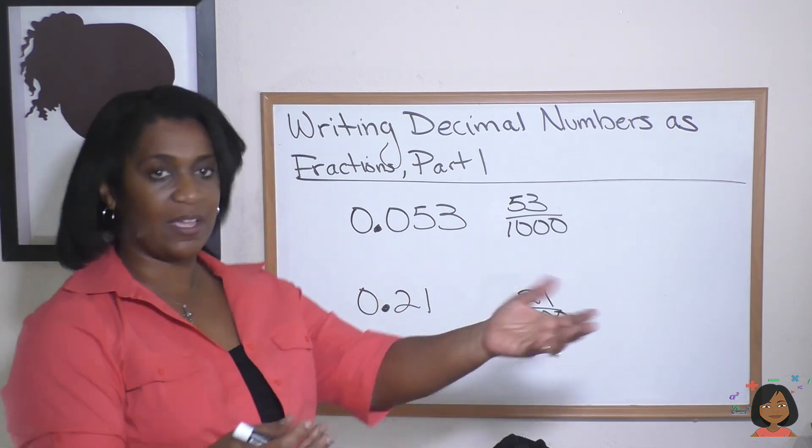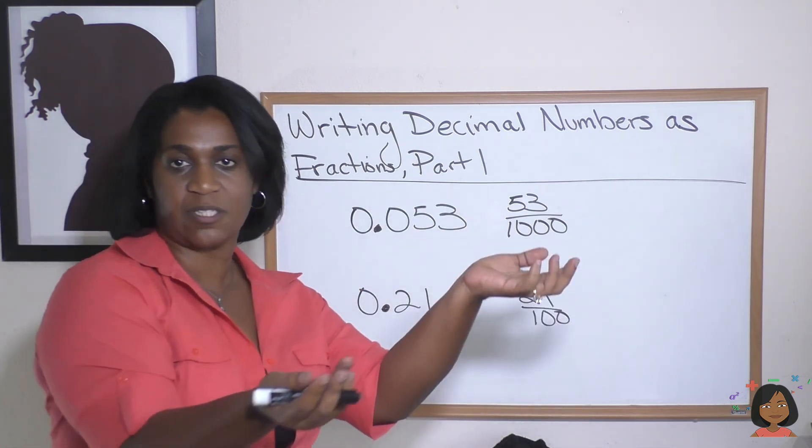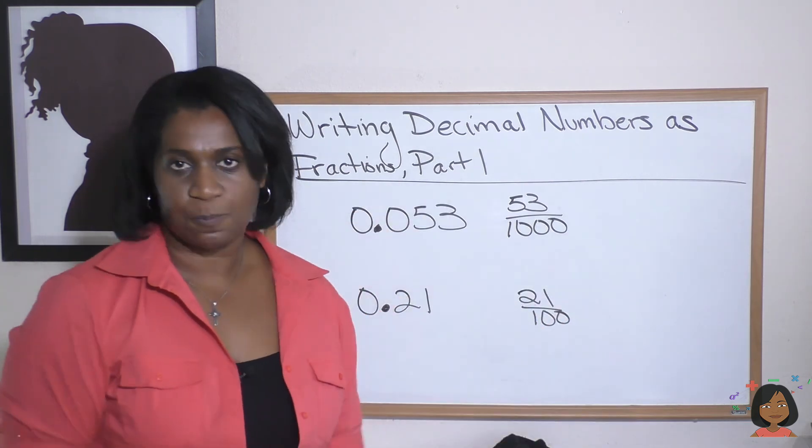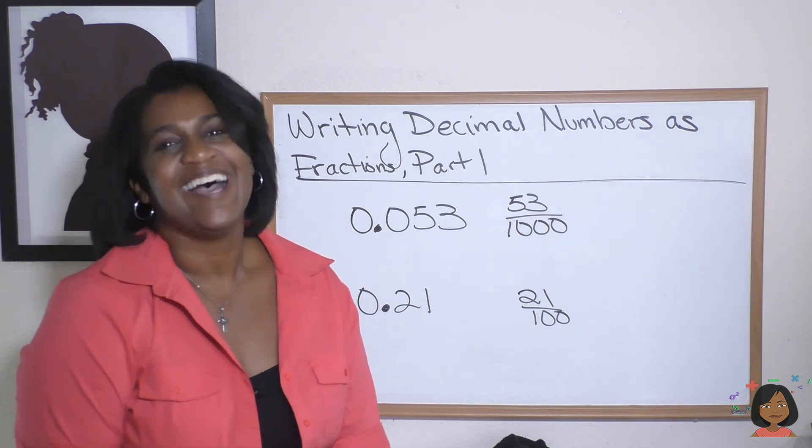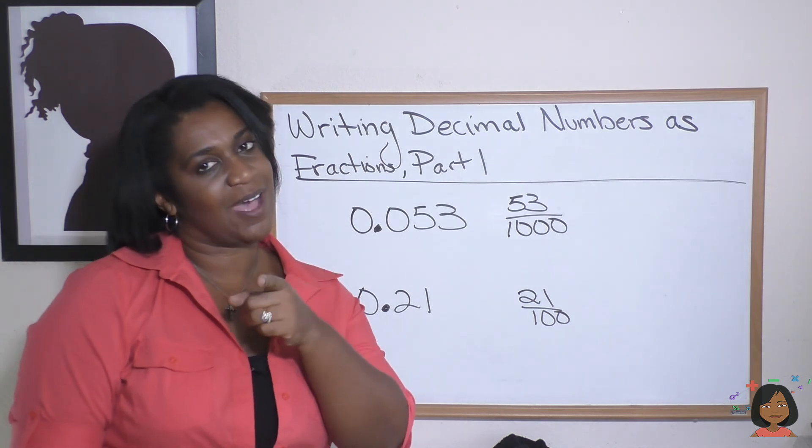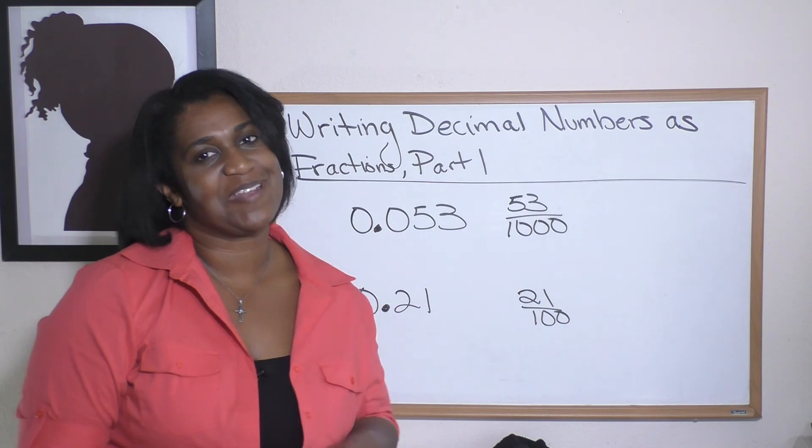You just follow the rules: find the place value, put your numerator on top, and get the right one on the bottom. That's pretty simple, isn't it? I know, a whole lesson on that. All right, hope you got that. If not, take a look at it again. I will see you next time. Bye bye.